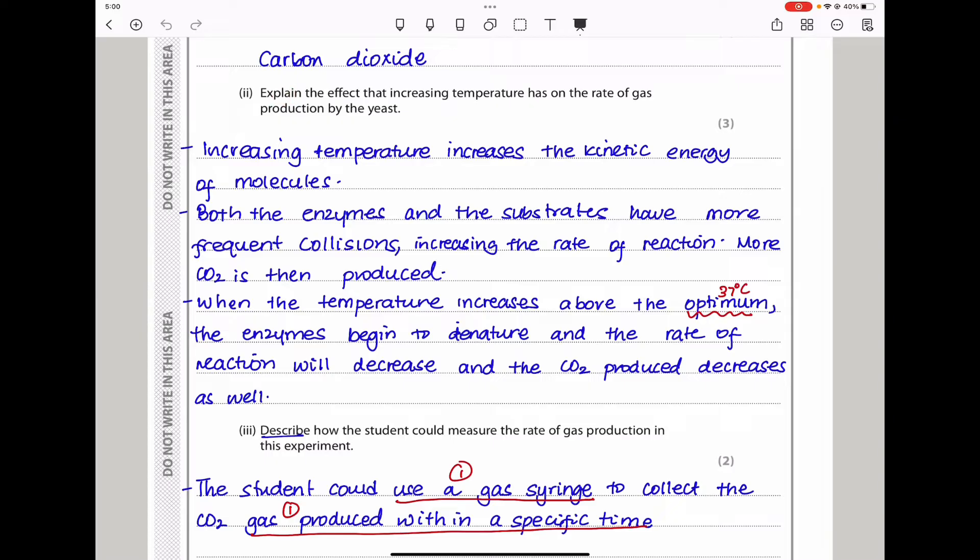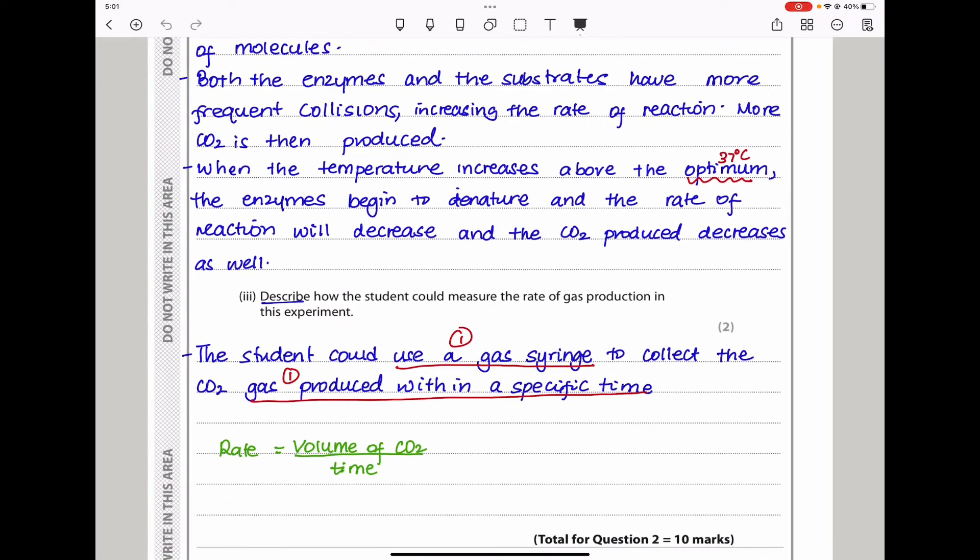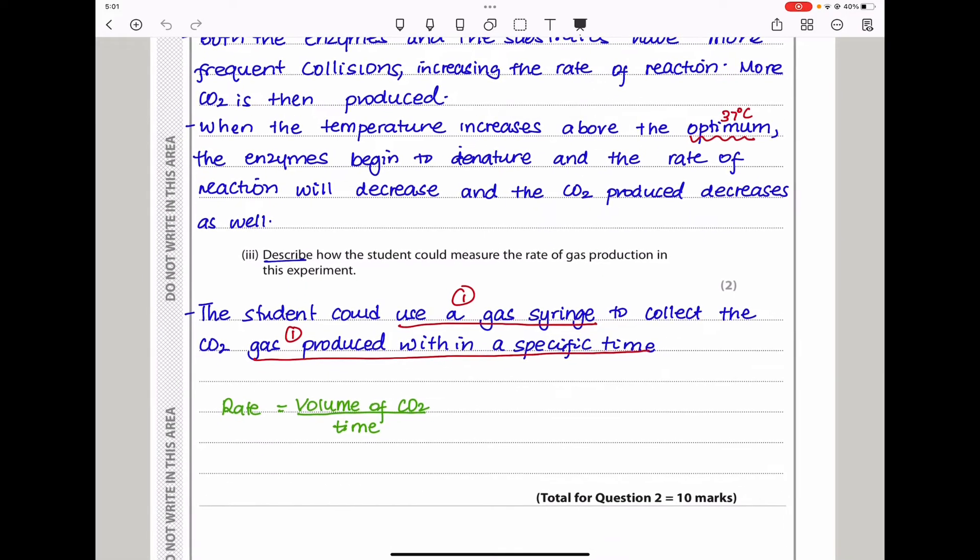This question was asking you to explain the effect of increasing the temperature on the rate of production of a gas. The higher the temperature, the higher the rate of gas production until the optimum temperature is reached. Beyond the optimum temperature, the higher the temperature, the lower the rate of gas production. Describe how the student could measure the rate of gas production in this experiment. Use a syringe to collect the gas within a specific period of time, and then you can use this equation: rate equals volume of CO2 produced over the specific time. That will give you the ideal rate.